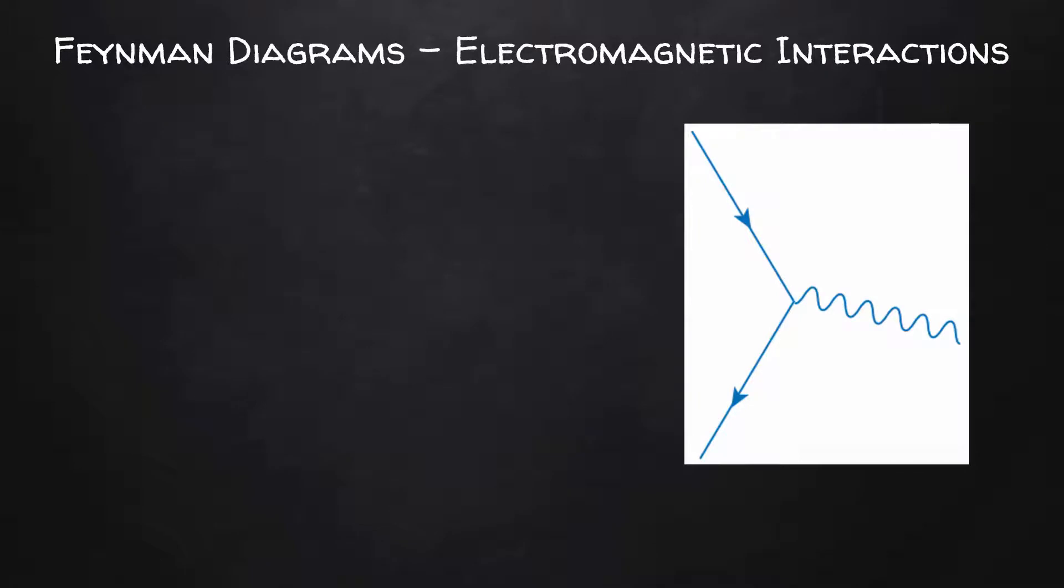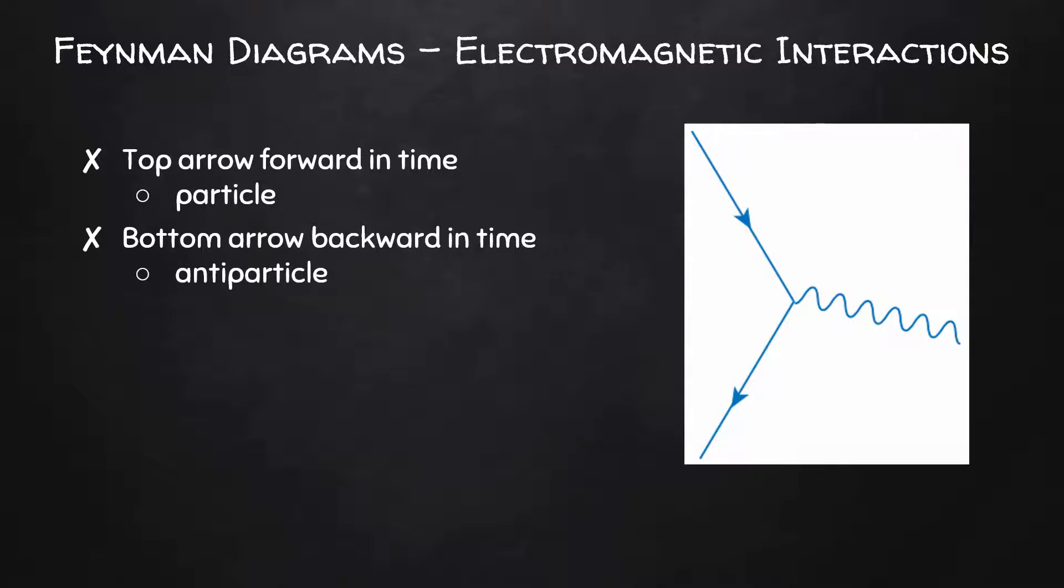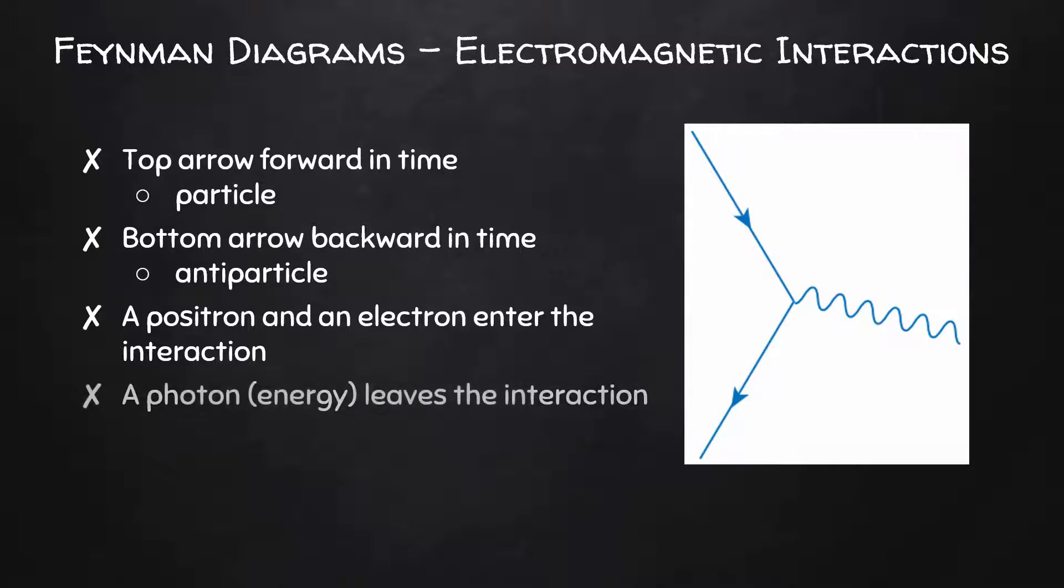Now let's look at a mirror image of that previous Feynman diagram. Here we have a top arrow going forward in time, a particle. The bottom arrow going backward in time, an antiparticle. We can interpret this as a positron and an electron entering the interaction. And we can see that there's a photon, again, representing some energy, leaving the interaction. This is the opposite of pair production.